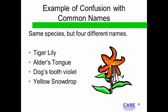For example, the four plant names on this slide are the same plant. You can see how hard it would be to know exactly which plant is being discussed, as the names do not give you a description of the plant.